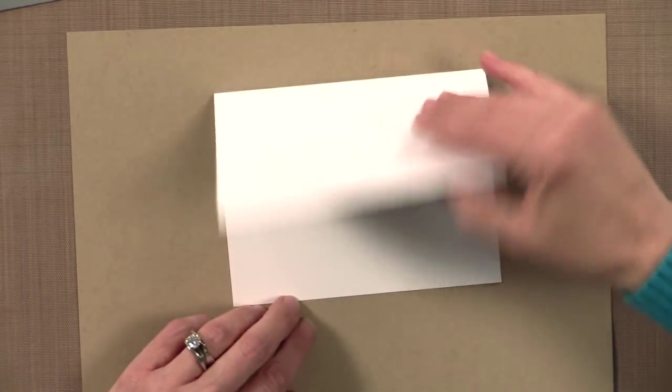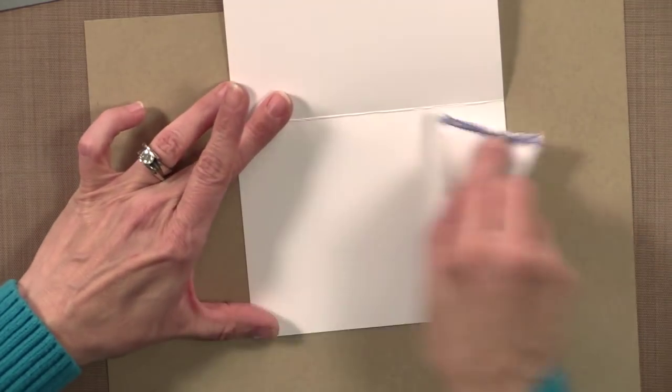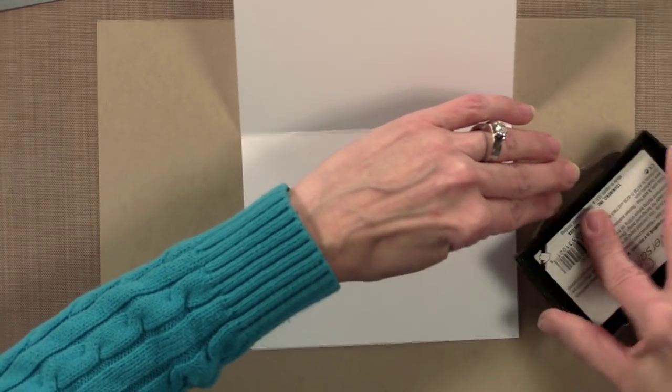Okay, there's one more area that we're going to emboss. Let me just turn this over, and that's the inside of the card. I'm going to add a little bit of the embossing magic, and I'm going to stamp my inside greeting.